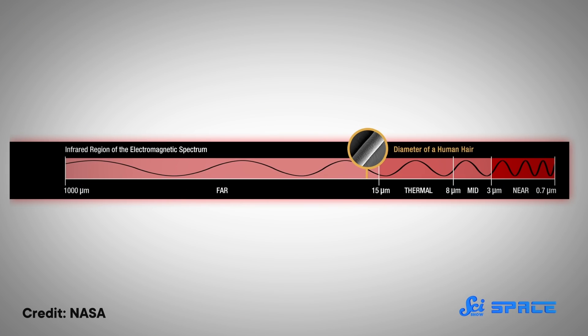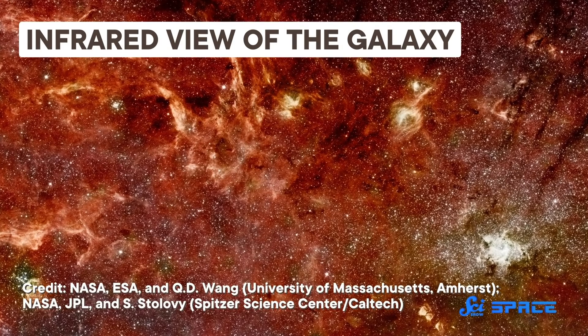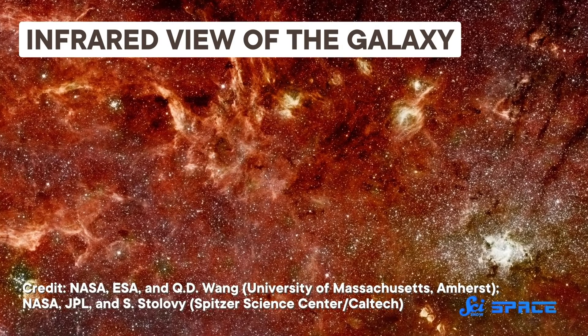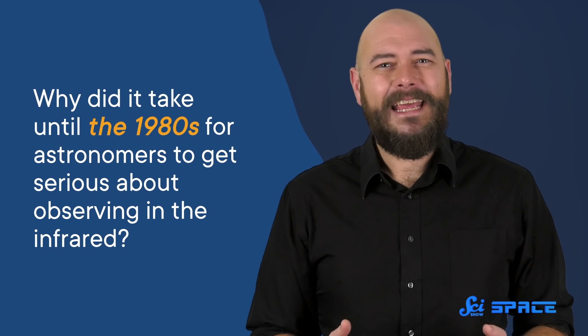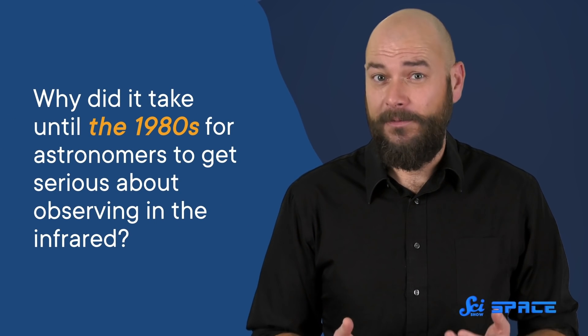The first big breakthrough came around the 1800s, when William Herschel discovered the existence of infrared, rays of light with a wavelength longer than those we can see. Infrared light was put to use for astronomy almost right away. But it wasn't until 1983 that we had the kind of all-encompassing view of the universe in infrared that we've always had in visible light. So, given these huge benefits, why did it take until the 1980s for astronomers to get serious about observing in the infrared?